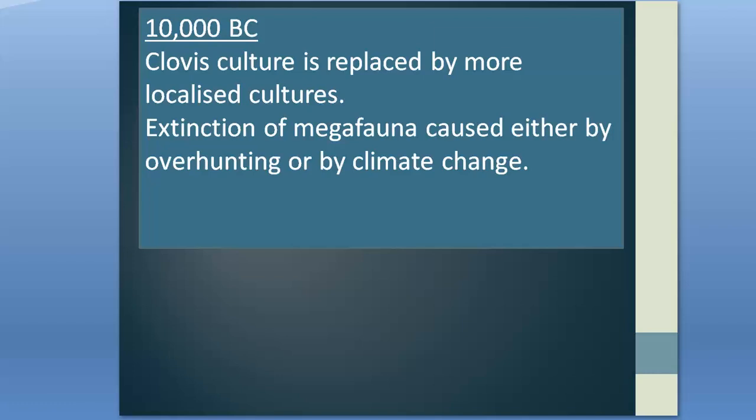The theory holds that the Clovis culture used long spears to overhunt and subsequently drive to extinction species of megafauna, including American horses, dire wolves, mammoths, mastodons, and saber-toothed cats. What was left were much smaller animals including bison, moose, elk, gray wolf, caribou, grizzly bear, black bear, deer, and mountain goat. The criticism of the overkill hypothesis is that the human population at that time was too small and not widespread enough to have caused such ecological damage.